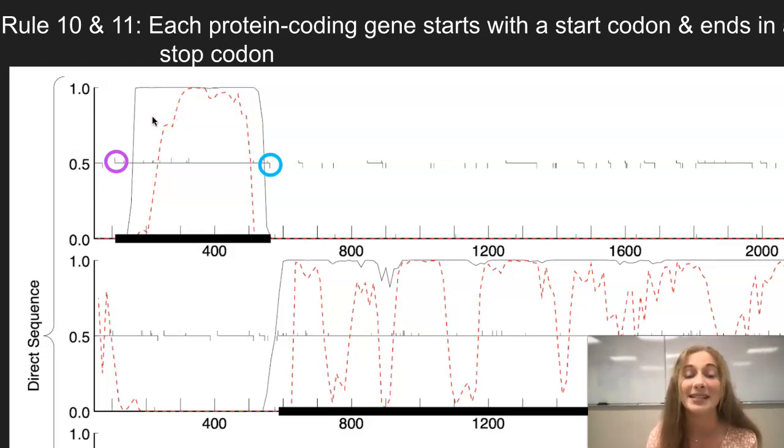So there might be databases that don't call the start TTG, but it actually might be the start in some situations. And then in this blue circle, this downtick signifies a stop codon, which will stop the coding of this gene.